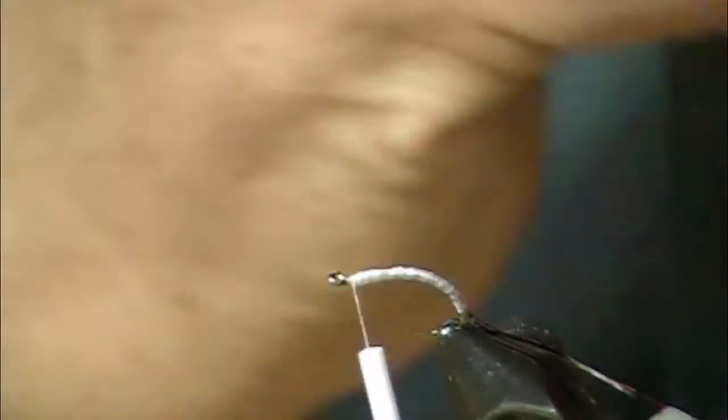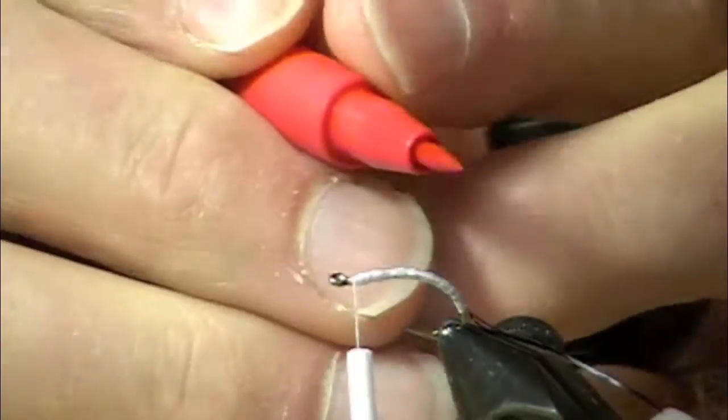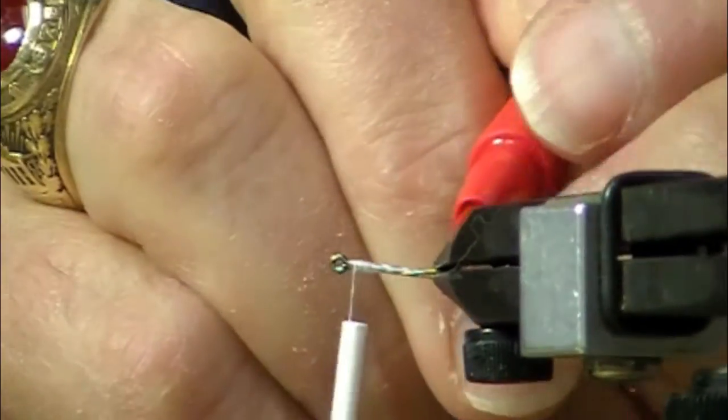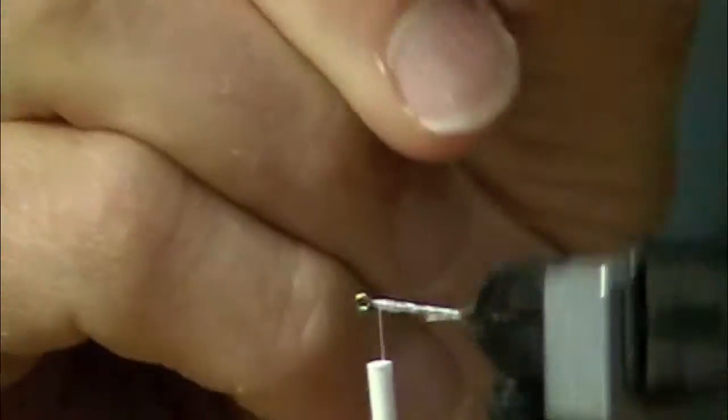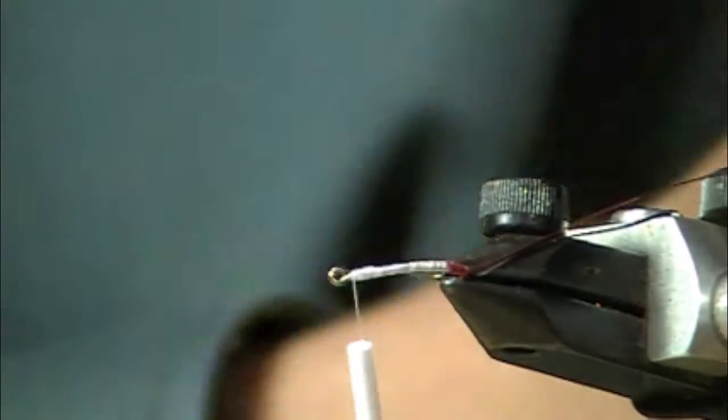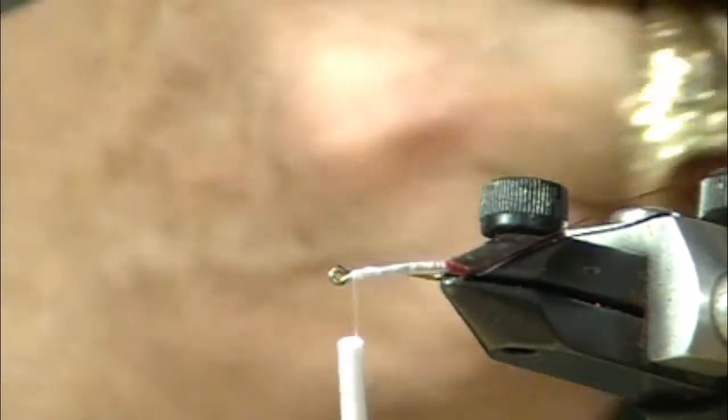Now I'm going to take a red marking pen, permanent ink, and I'm going to make the butt red. Kind of like the Brian Chan frostbite pattern, and you can do these with any color you want.